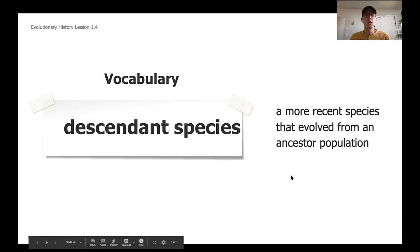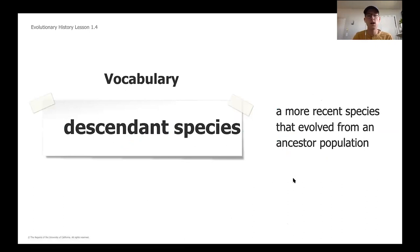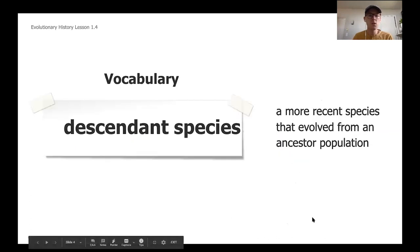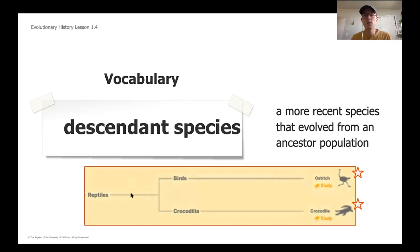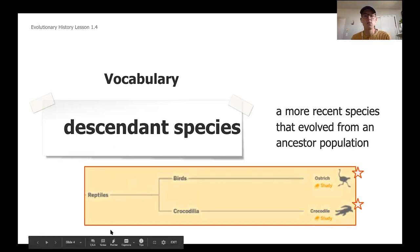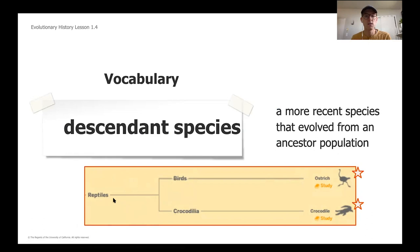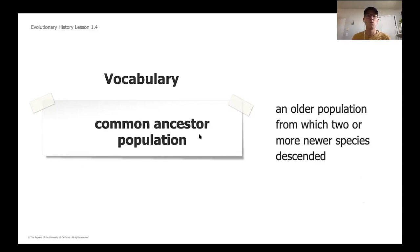As we go into today's unit, there are a couple of important vocabulary words. The first is "descendant species" — a more recent species that evolved from an ancestor population. If you've ever seen a family tree, we're going to look at the tree of life, which shows how all different animals are related. For example, the ostrich and the crocodile are descendant species because they branched off from reptiles, their ancestor population.